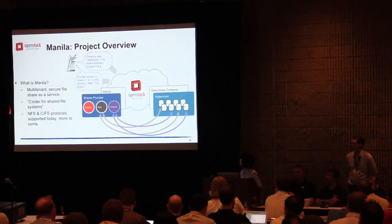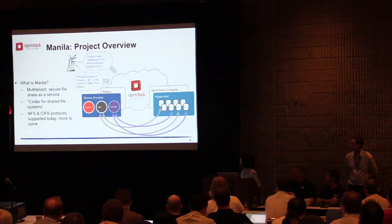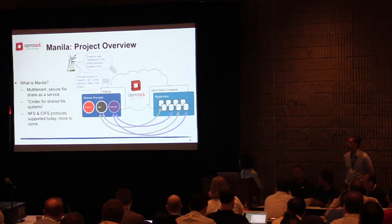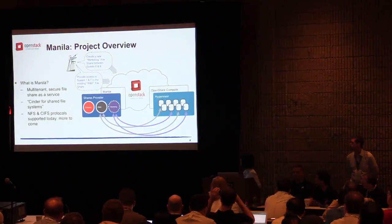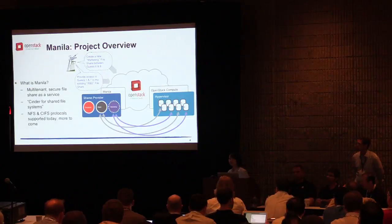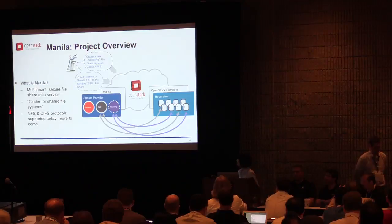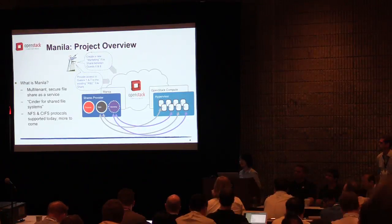Here's a diagram that shows a Manila use case in an OpenStack cloud. There are two requests coming from the orchestration layer. The first one wants to provide access to guests 1 and 7 to the existing R&D file share. The second one wants to create a new file share for marketing and provide access to guests 6 and 8. Manila enables and automates this process, making it easy for guests to have access to the file shares through isolated tenant networks.